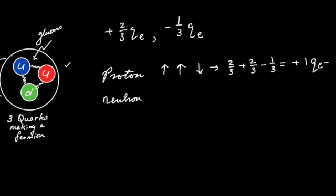The neutron has two down quarks and one up quark. Therefore, the charge calculation will be minus a third, minus a third for the second quark, plus two-thirds. That gives us a net charge of zero.